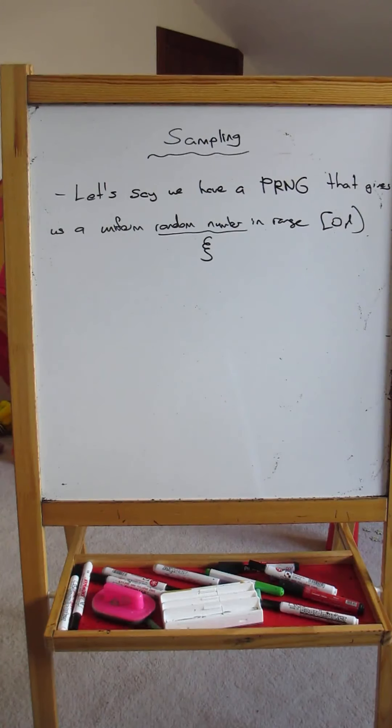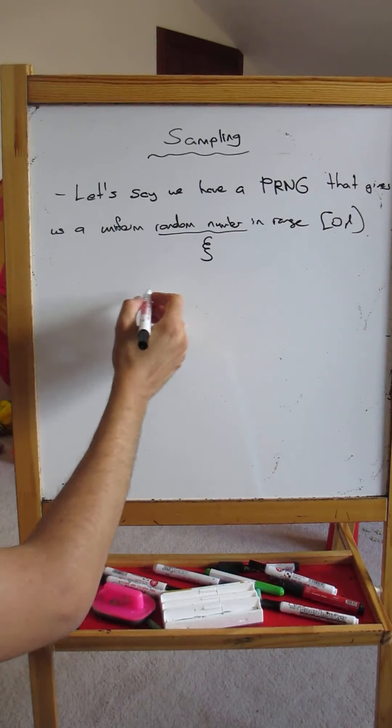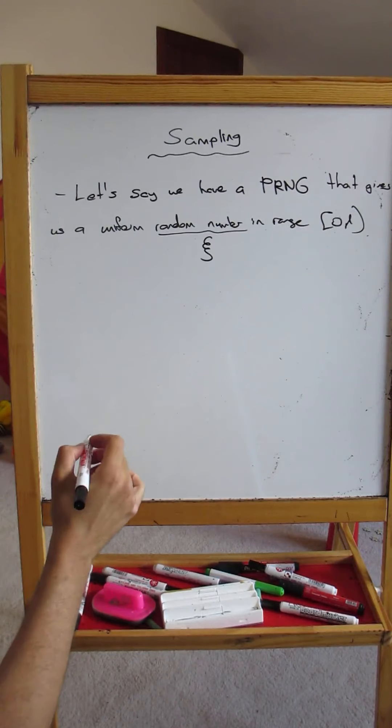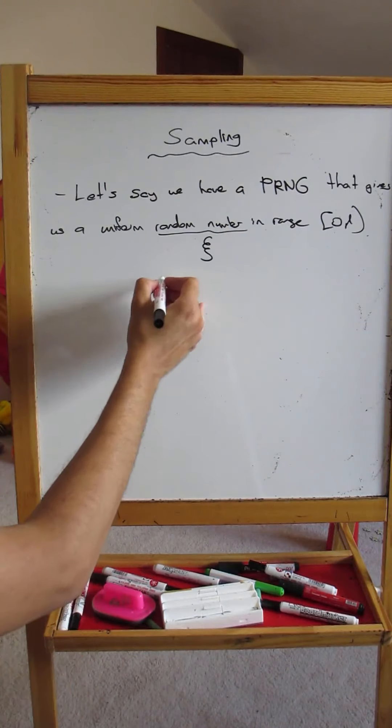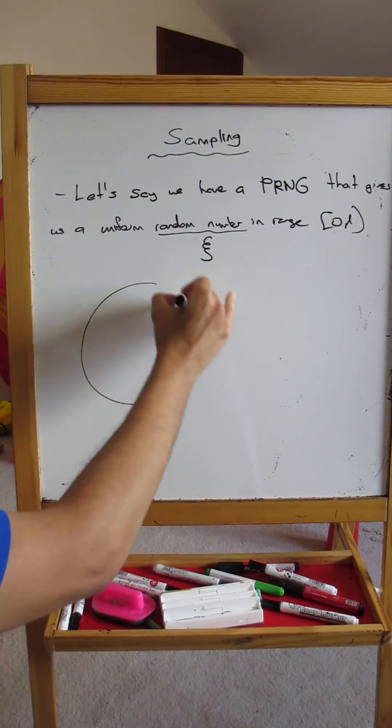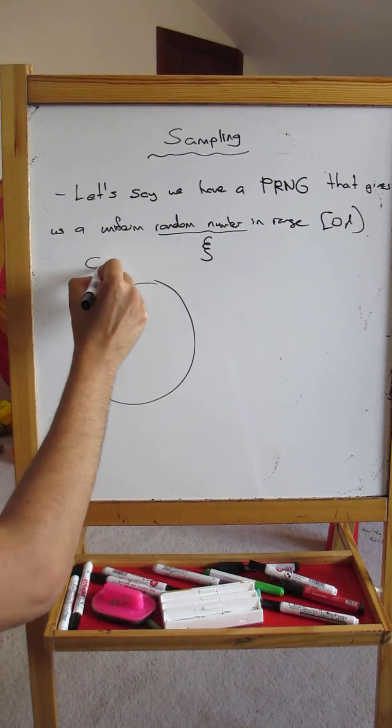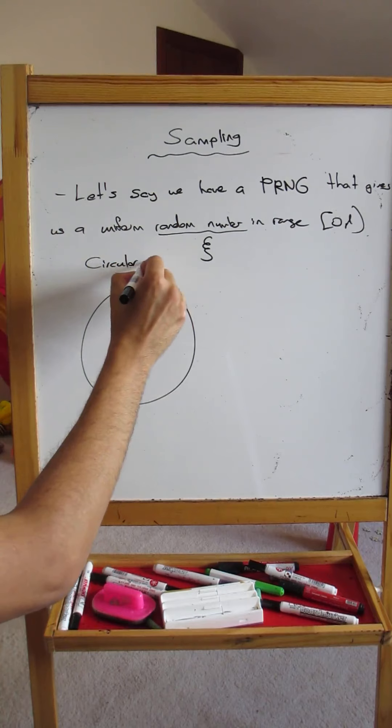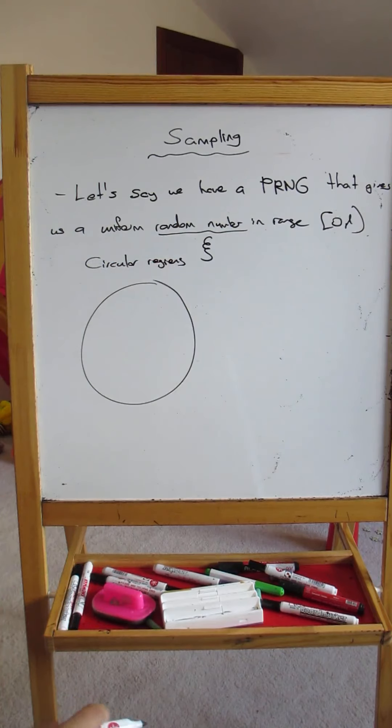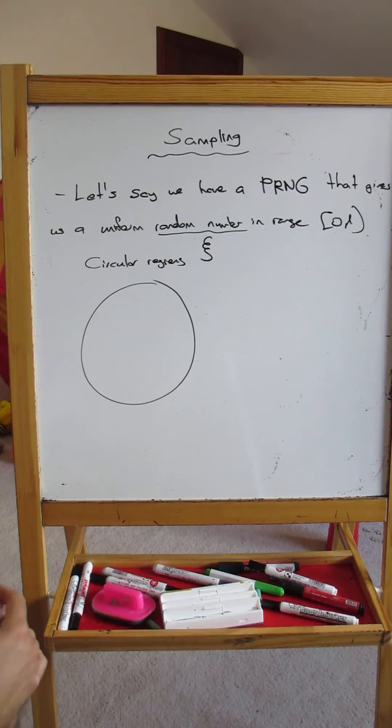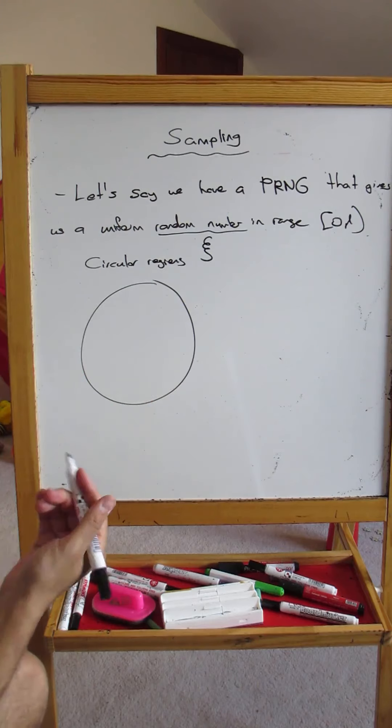Now let's think about what happens if you have a circular region, not a region defined by two vectors, but let's say we have a circular region like a disk. How do we sample uniformly on a disk? The disk can be defined by any point, which can be defined by two parameters.